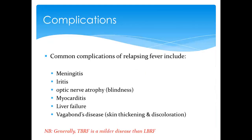Complications can arise because the spirochetes have a tendency to penetrate organs throughout the body. They can cross the blood-brain barrier causing meningitis, cause uveitis in the eyes, myocarditis, liver failure, and skin thickening due to inflammation — known as vagabond's disease. Tick-borne relapsing fever is always milder, while louse-borne is more severe.